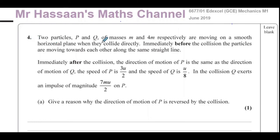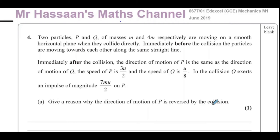It says two particles P and Q of masses M and 4M respectively are moving on a smooth horizontal plane when they collide directly. Immediately before the collision, the particles are moving towards each other along the same straight line. Immediately after the collision, the direction of motion of P is the same as the direction of motion of Q. The speed of P is 3U over 2 and the speed of Q is U over 8. In the collision, Q exerts an impulse of magnitude 7MU over 2 on P. Give a reason why the direction of motion of P is reversed by the collision.